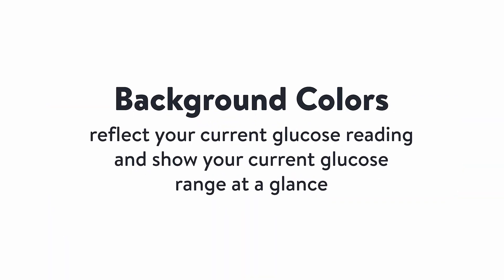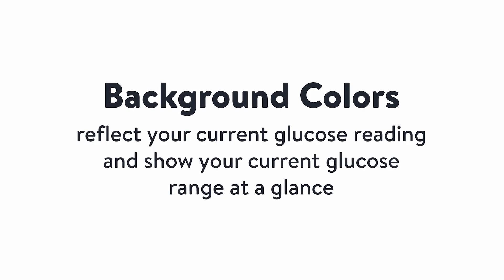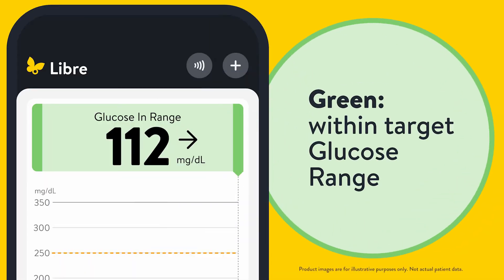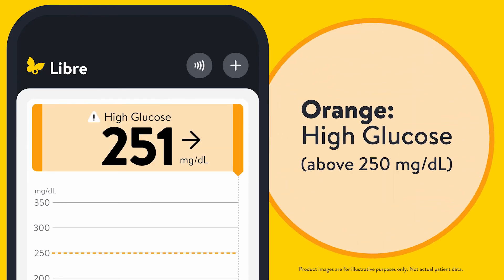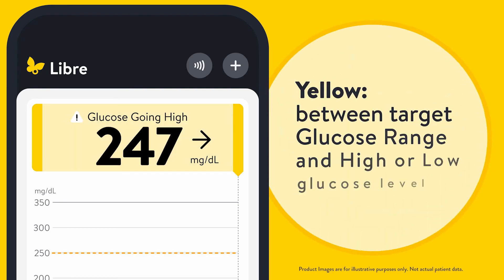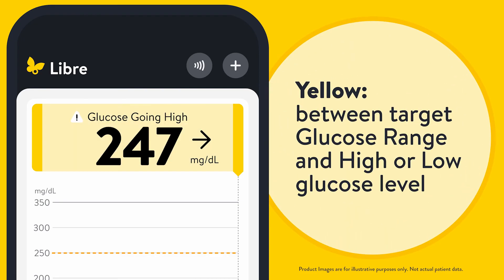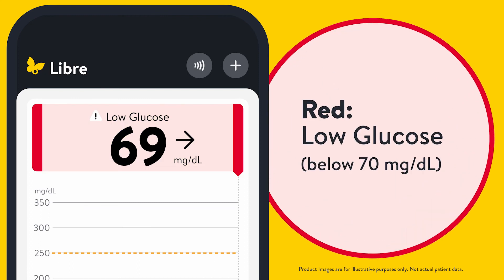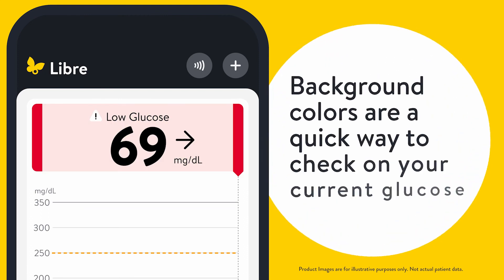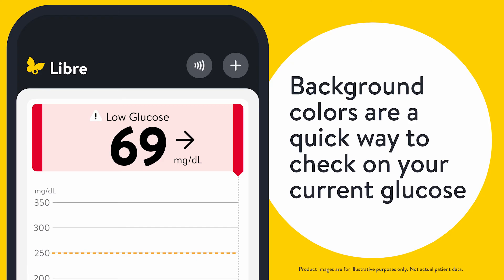Your background colors reflect your current glucose reading and show your current glucose range at a glance. Green means you are within your target glucose range. Orange means high glucose or above 250 milligrams per deciliter. Yellow means between your target glucose range and a higher low glucose level. Red means low glucose or below 70 milligrams per deciliter. Background colors are a quick way to check on your current glucose.